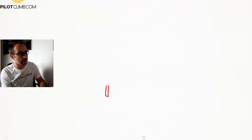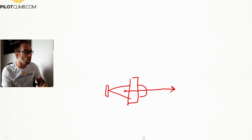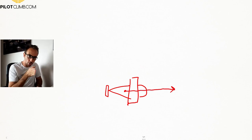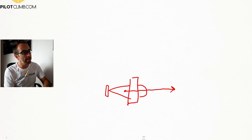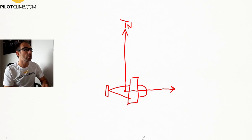Let's jump to the whiteboard and explain what the deviation angle is in aviation. As you can see, I've drawn an aircraft here. The heading of your aircraft is where your nose is pointing. Let me also draw the true north — TN, true north.